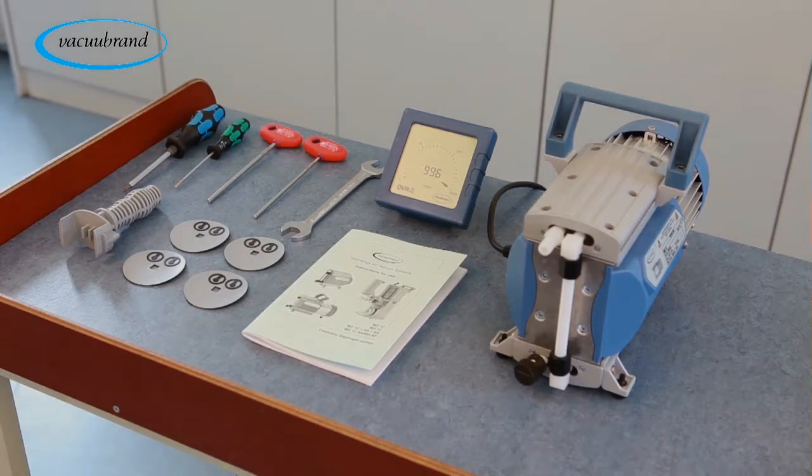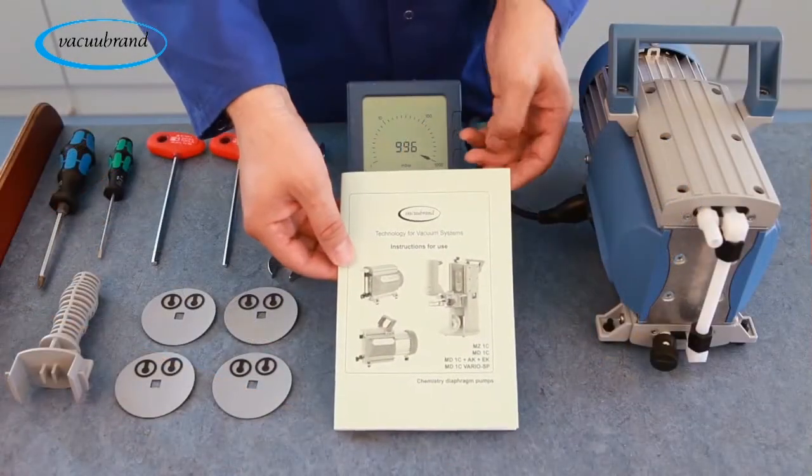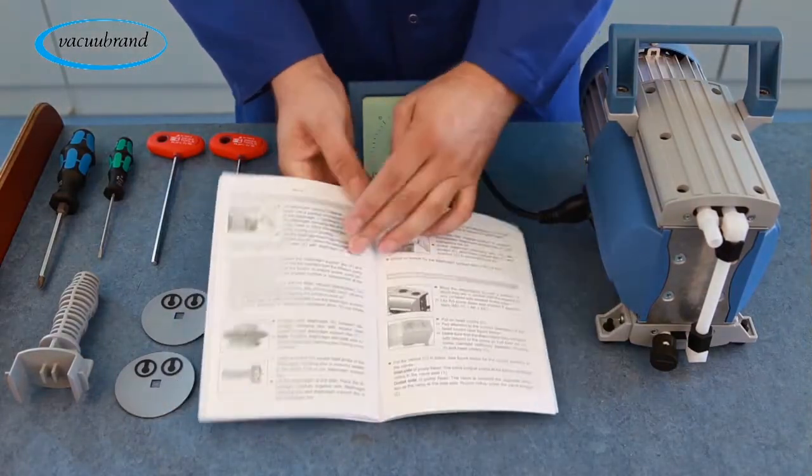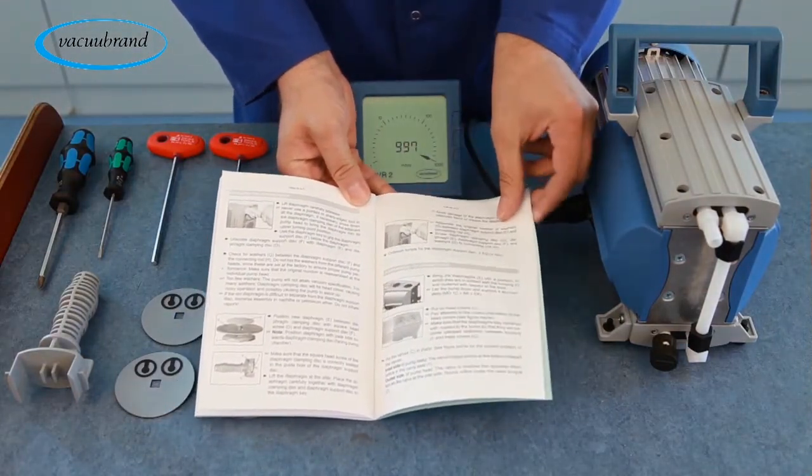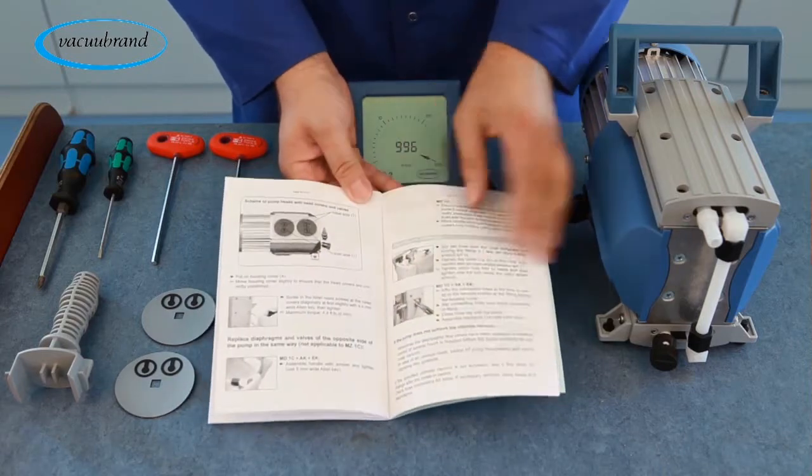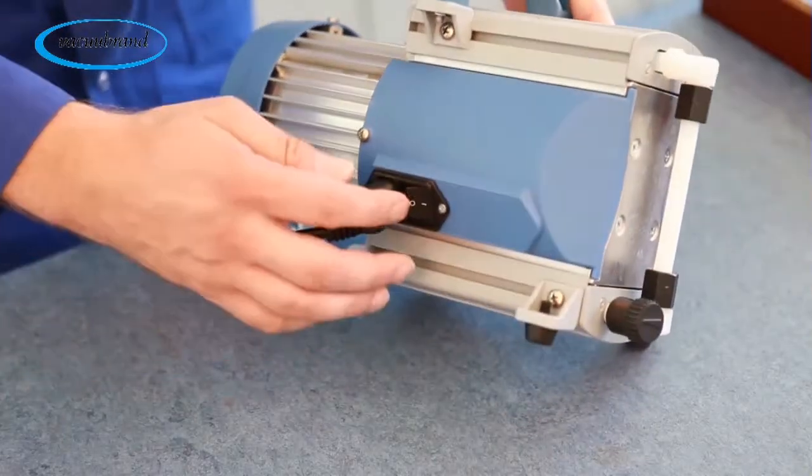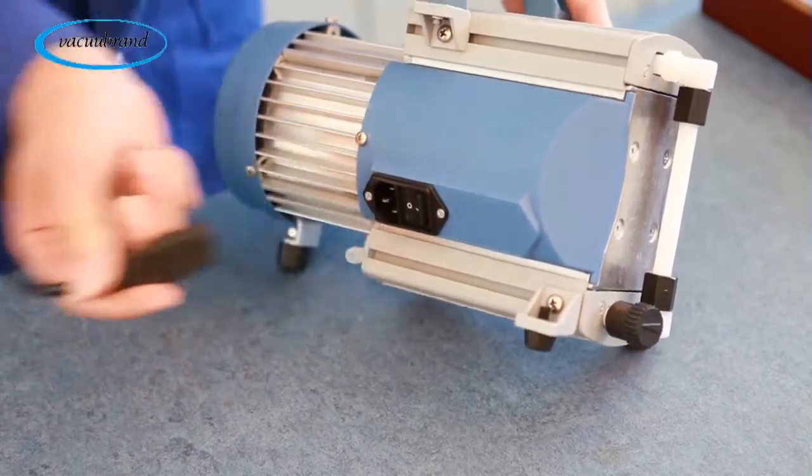You will also need a service manual for reference, an alcohol cleaning solution, and a clean towel for head cover cleaning. Read the instructions in your service manual carefully to understand the details of servicing your vacuum pump. Turn off the power to your vacuum pump and disconnect the power cord.